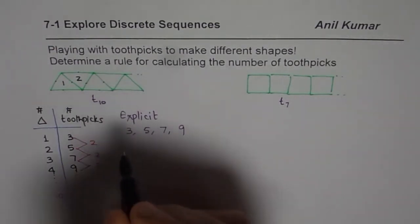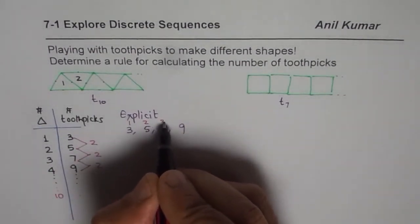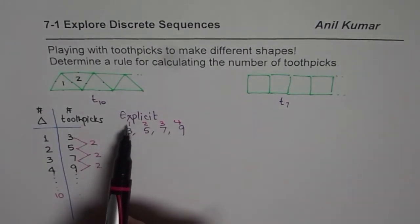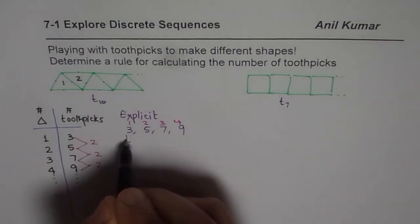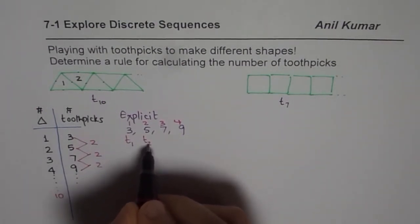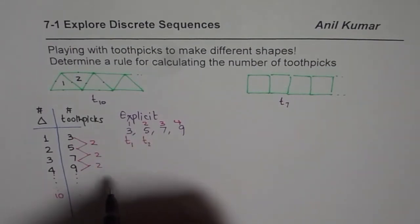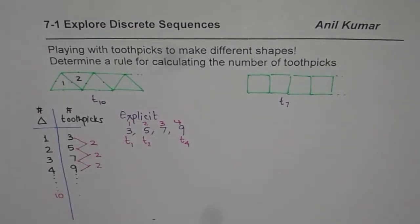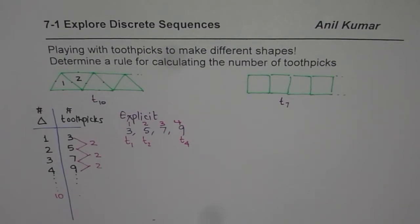Let me write down the number of triangles on top of these numbers. It really means that the number of toothpicks for one triangle is three — we call that T1. T2 is the number of toothpicks required for two triangles. Similarly, T4 is number of toothpicks for four triangles. So that is the nomenclature we are using. It really means: for making ten triangles of this kind, how many toothpicks are required? That is what the question is.